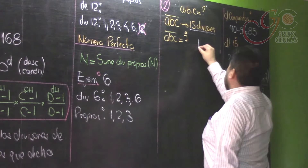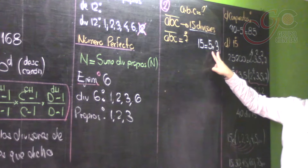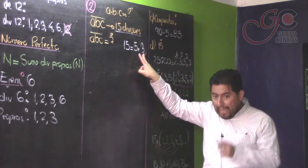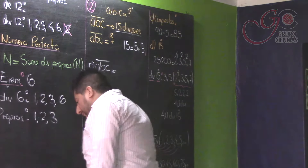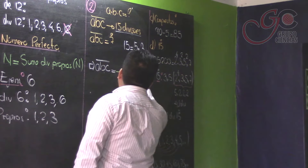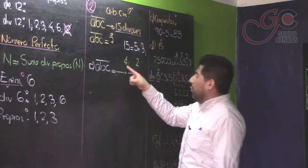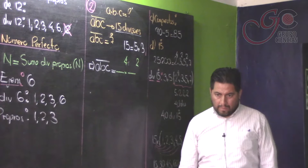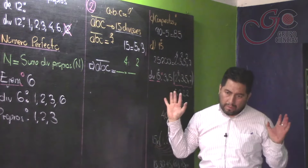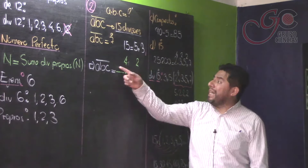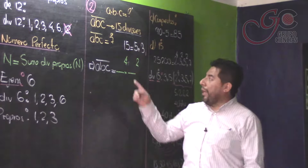Dígame dos números cuyo producto sea 15: 5 por 3. Ellos son los exponentes aumentados en 1. O sea, nuestro ABC, cuando se descomponga canónicamente, debería tener la forma de algo a la cuarta por algo al cuadrado, para que genere 15 divisores (porque 4+1=5 y 2+1=3, y 5×3=15). Aquí solo pueden ir números primos. Como ABC es múltiplo de 7, uno de esos dos factores tiene que ser 7. El 7 no puede ir en la cuarta potencia porque 7 a la cuarta ya es de 4 dígitos, así que obligatoriamente el 7 va en el exponente al cuadrado.